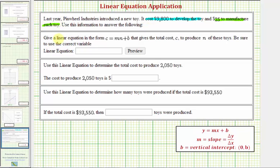We're going to use this information to first write a linear equation in the form C equals M times N plus B that gives the total cost C to produce N of these toys.